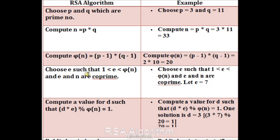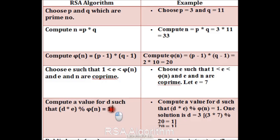In the fourth step, we have to choose a value of E which is in between 1 and φN, and which must be a prime number. In the fifth step, we have to calculate the value of D such that D into E modulo by φN is equal to 1.